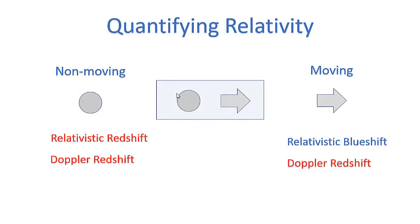In the next case, we have an object not moving and an object moving away from it. The moving object is experiencing clock retardation, so relative to the stationary observer, the moving object seems relativistically redshifted. Because the object is moving away, the stationary observer is also going to see a Doppler redshift.